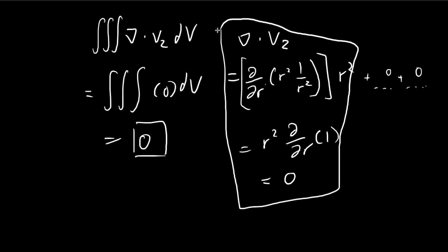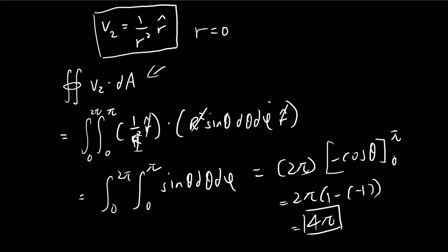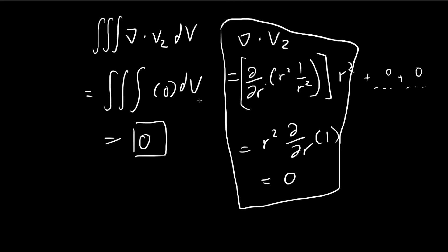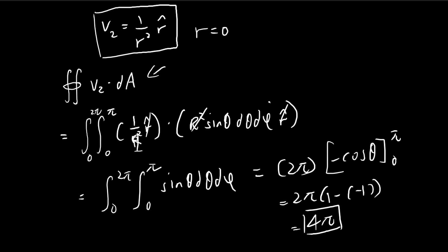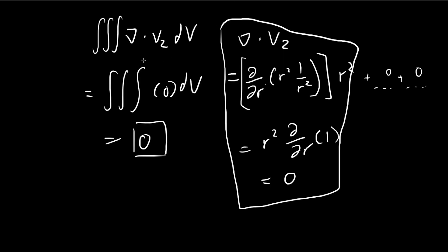In order to reconcile these two results, later on in the book, you'll encounter something called the Dirac delta function. Using that, you can come up with a consistent result. But right here, with what we know so far, for this vector field in part b, we're getting different results for the surface integral and the volume integral.